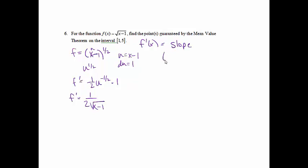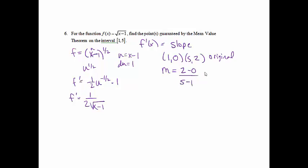Next, we find the slope. We need the points at x = 1 and x = 5 from the original equation. Plugging in 1 gives 0, and plugging in 5 gives 2. So the slope is (2 − 0) / (5 − 1) = 2/4, which reduces to 1/2. Somewhere the derivative equals that slope.